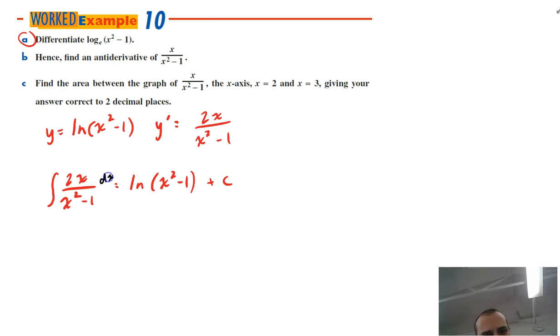Alright, I should have a little with respect to x there. Okay, so let's see, find the area between the graph of x over x squared, oh sorry, hence find an antiderivative of x over x squared minus 1.